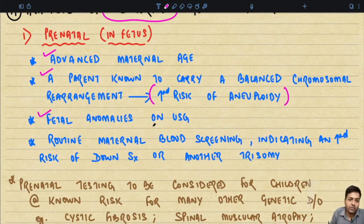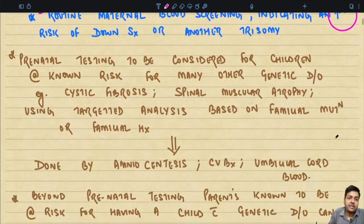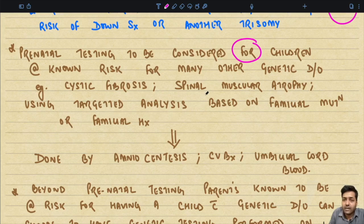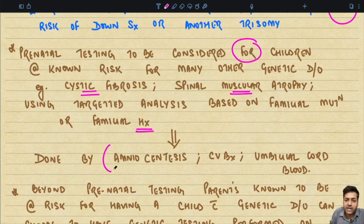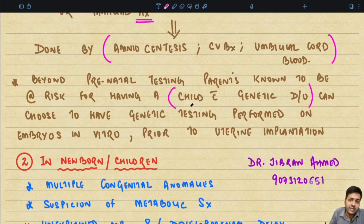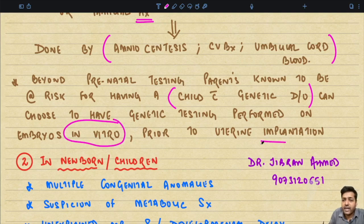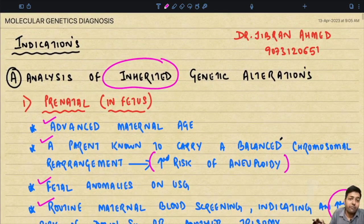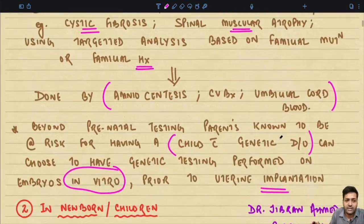Advanced maternal age is one reason for carrying out molecular genetic diagnosis, or a parent known to carry a balanced chromosomal rearrangement which increases the risk of aneuploidy or fetal anomalies — if basically detected on ultrasonography or routine maternal blood screening indicating increased risk of Down syndrome or another trisomy. Prenatal testing is also considered for children at known risk for many genetic disorders, such as cystic fibrosis or spinal muscular atrophy, using targeted analysis based on familial mutation.